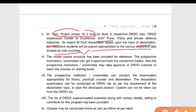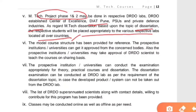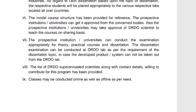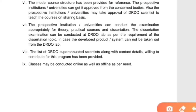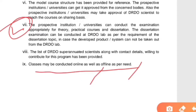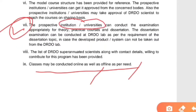After that, it is written that the model course structure is given here for reference. One more thing is mentioned: classes may be conducted online as well as offline as per the need, considering the current situation of the pandemic. Point number 7 states that prospective institutes and universities can conduct examinations appropriately for theory, practical courses, and dissertation. Dissertation examination can be conducted as per the requirement of the dissertation topic.